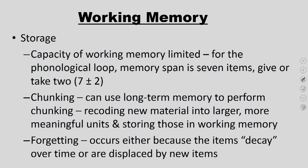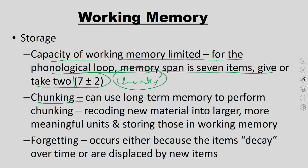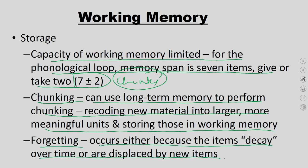What is the capacity of working memory? For the phonological loop, memory span is 7 ± 2 items. Chunking — using long-term memory to recode new material into larger, more meaningful units — helps store more. Forgetting from working memory occurs either because items decay over time or are displaced by newer items. If you do not use an item for less than 30 seconds, new incoming information displaces old information since storage capacity is limited.